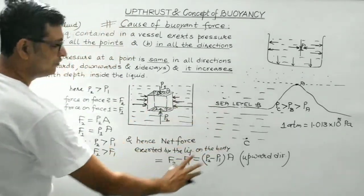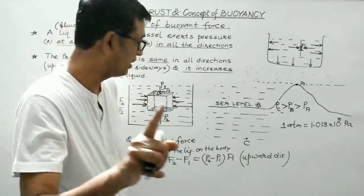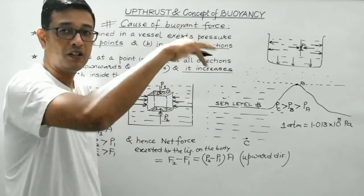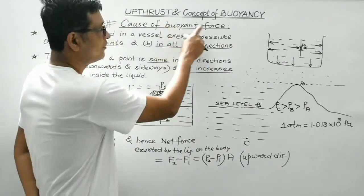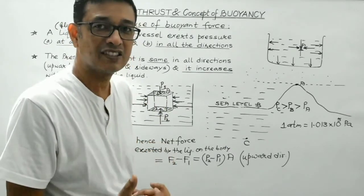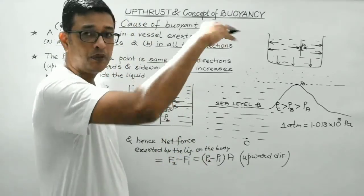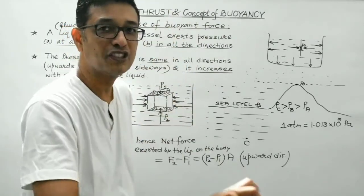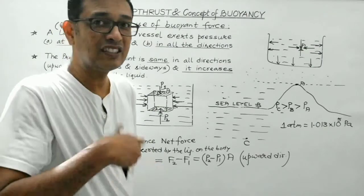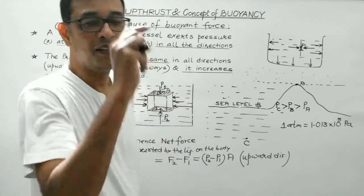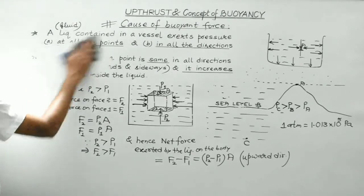This was a very important concept. The cause of buoyant force is the difference in pressure on the top and bottom faces of the body when immersed inside the liquid. Due to this pressure difference, a net upward force acts on the body. This upward force exerted by the liquid is known as buoyant force. Now let us consider the magnitude of the buoyant force.